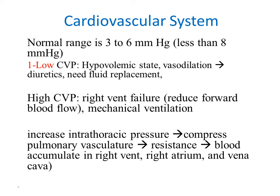In right ventricular failure, blood remains in the right side of the heart, causing elevated pressure in the superior vena cava and central venous veins, resulting in a high central venous pressure reading. Regarding mechanical ventilation, increased intrathoracic pressure compresses the pulmonary vasculature, increasing resistance so blood accumulates in the right ventricle, right atrium, and vena cava, producing a high central venous pressure reading.